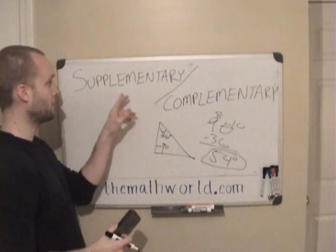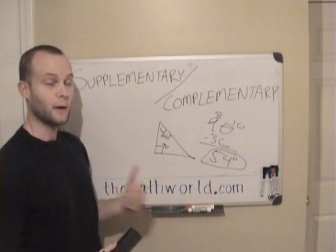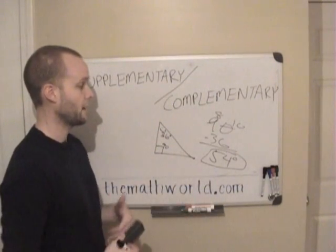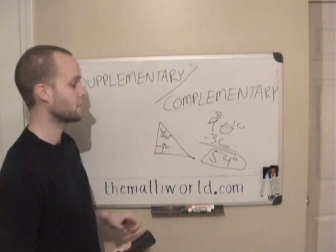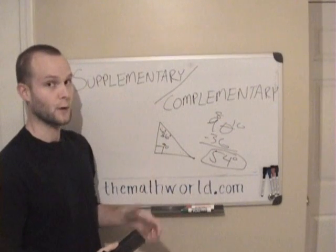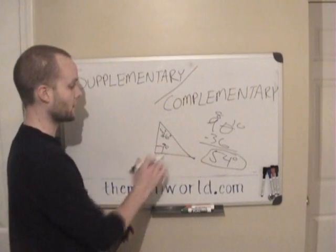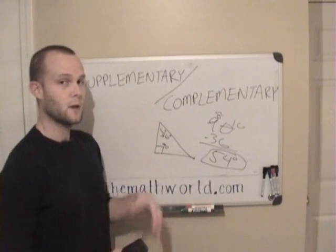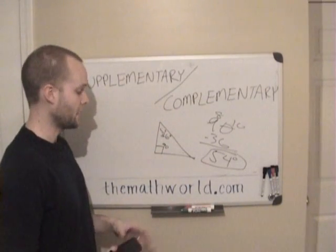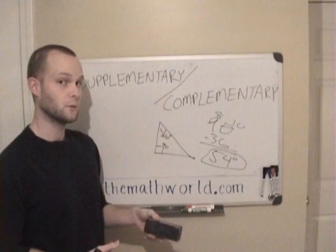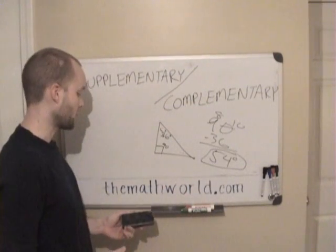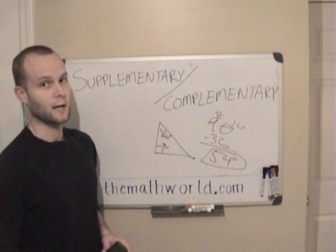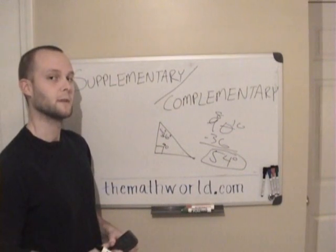An easy way to remember: supplementary means two angles equal 180 degrees, and complementary means two angles add up to 90 degrees. You'll often see complementary angles in a right triangle — the two angles that are not the right angle itself. These are supplementary and complementary angles. Hope you guys enjoyed the video. Please subscribe to the YouTube channel and check out the website TheMathWorld.com to practice this and learn other geometry topics. Thanks for watching — I'll see you next video.